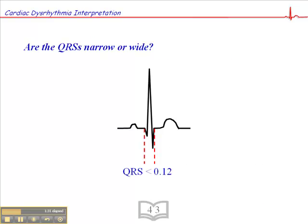A narrow QRS is less than 0.12 second, or less than three small squares. Some people teach that a narrow QRS is equal to or less than 0.12, and that is not correct. A narrow QRS is less than 0.12 second. If a QRS is 0.12 second or greater, it's considered wide.